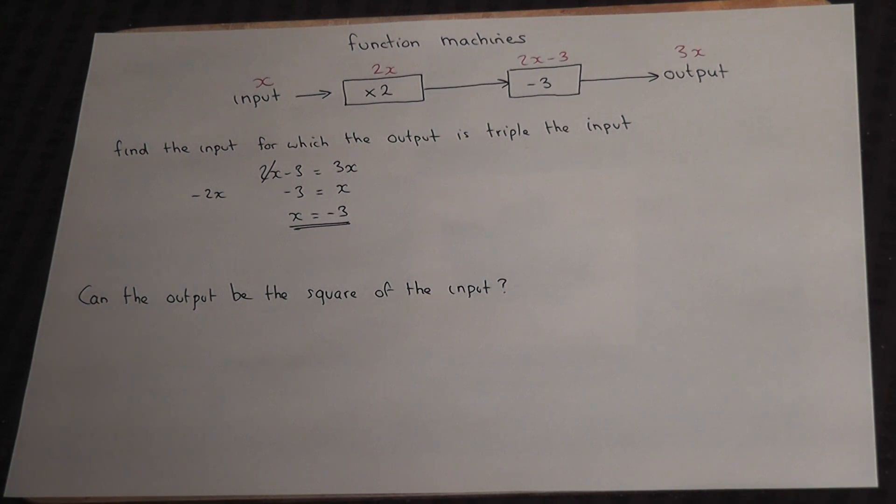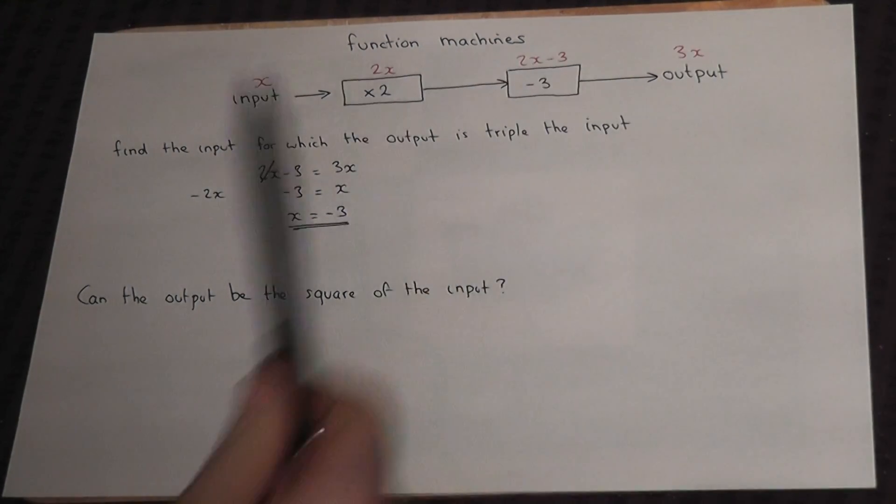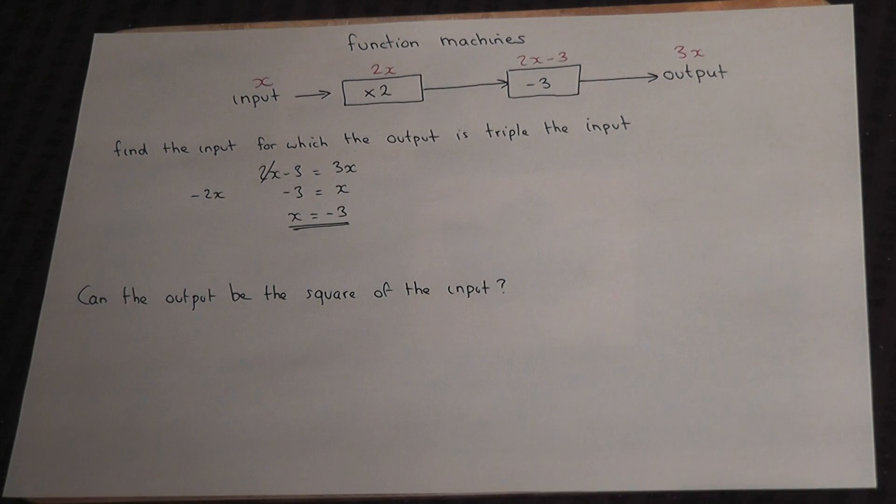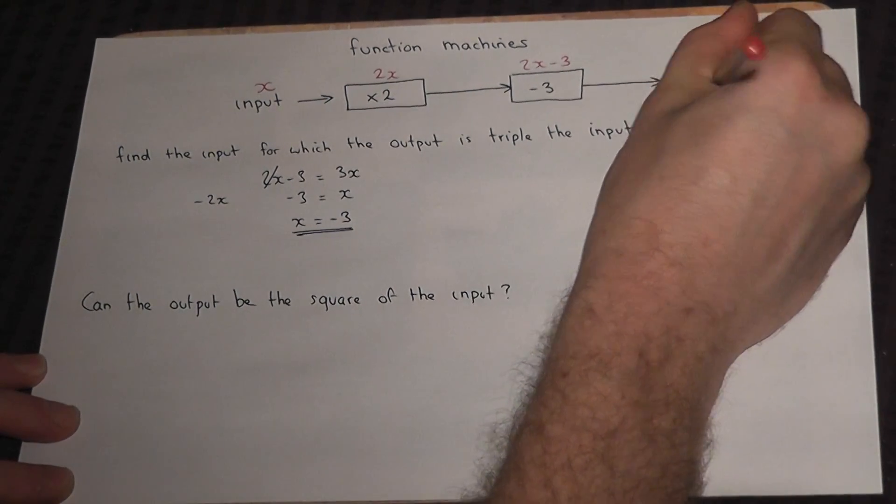So for these grade B ones, set an equation up, and we need the output to equal the operations. But for the second one, the question says, could the output actually be the input squared?